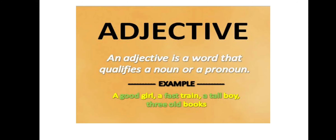What is an adjective? An adjective is a word which describes something. For example: a good girl, a fast train, a tall boy, three-year-old books, mischievous kid, very fast runner, and many more. An adjective is a word which describes a noun or maybe a pronoun.